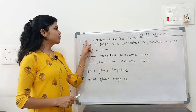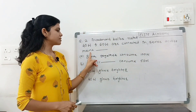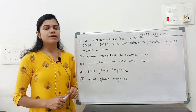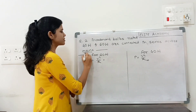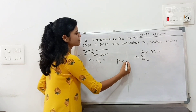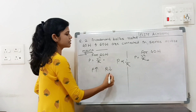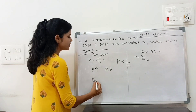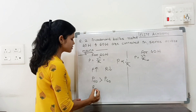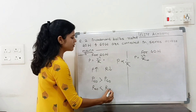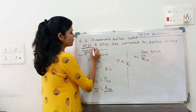Let's check out an example. Two incandescent bulbs rated 40 W and 60 W are connected in series across the mains. Using P equals V² upon R, since voltage is the same, P is directly proportional to 1 upon R. So if P increases, R decreases. The 60 W bulb has lower resistance than the 40 W bulb, meaning the 40 W bulb glows brighter.